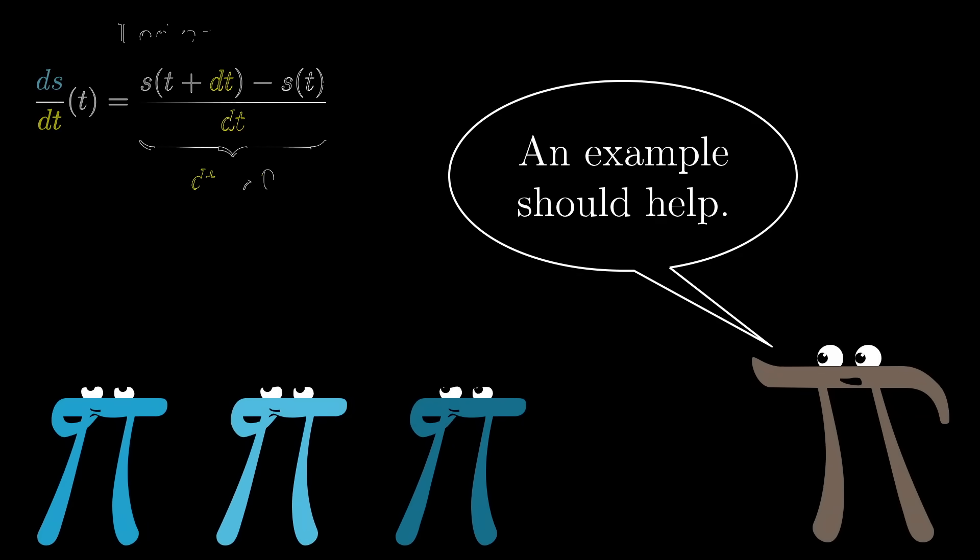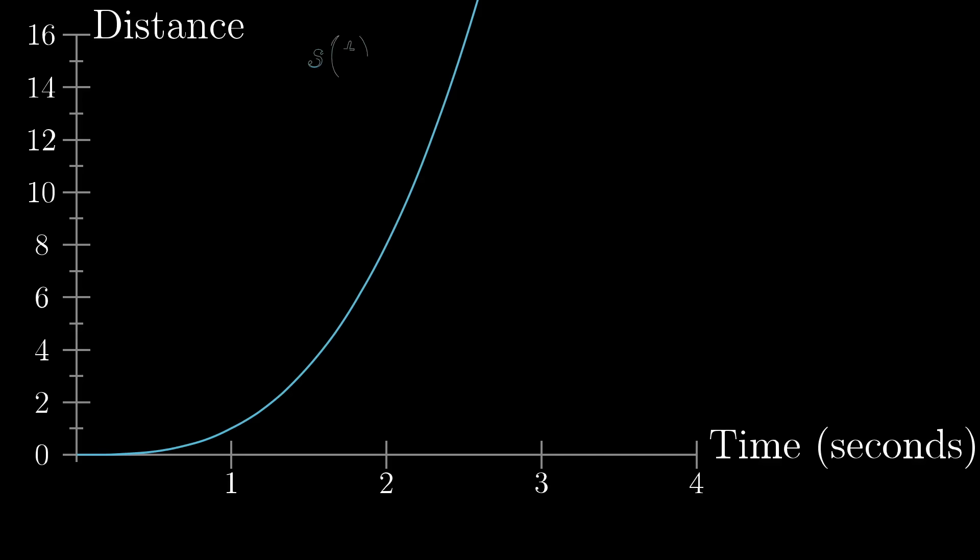I think a specific example should help here. You might think that asking about what this ratio approaches for smaller and smaller values would make it much more difficult to compute, but weirdly it kind of makes things easier. Let's say that you have a given distance versus time function that happens to be exactly t cubed. So after one second the car has traveled 1 cubed equals 1 meter, after two seconds it's traveled 2 cubed, or 8 meters, and so on.